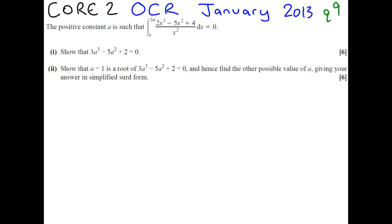Hi everyone, welcome to my Core 2 OCR January 2013 video. We're looking at question 9, which is about integration. It's quite a tricky integration question because, first of all, the actual thing that we have to integrate looks quite horrible. And secondly, the limits that we are going to integrate between are to do with unknowns, A and 2A.